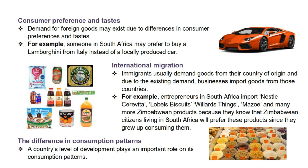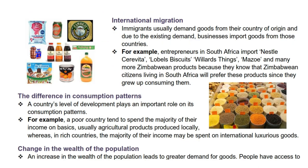Next is international migration. Immigrants usually demand goods from their country of origin and due to the existing demand, businesses import goods from those countries. For example, entrepreneurs in South Africa import Nestle Cerevita, Lobel's Biscuits, Willard's, Mezzo and many more Zimbabwean products because they know that Zimbabwean citizens living in South Africa will prefer these products since they grew up consuming them.